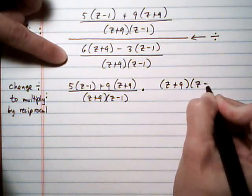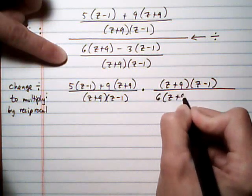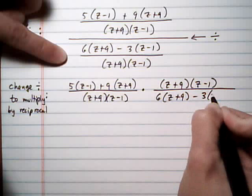z plus 9, z minus 1, so you flip the bottom. 6 times z plus 9, take away 3 times z minus 1.